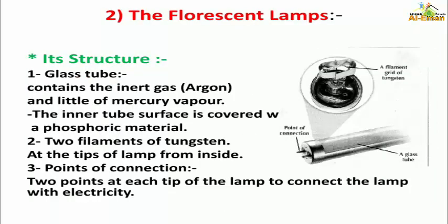The second type of lamp is called the fluorescent lamp. It consists of: number one, a glass tube containing argon gas and a little mercury vapor — the inner tube surface is covered with phosphoric material. Number two, two tungsten filaments at the tips of the lamp from inside. Number three, connection points — two points at each tip of the lamp.